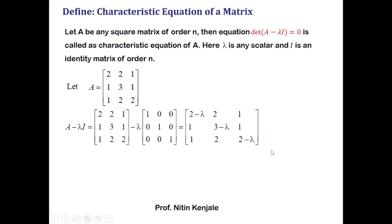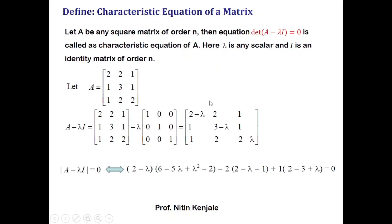Now we will find its determinant and equate it with zero. Further simplifying this, we will have the characteristic equation of matrix A as minus lambda cubed plus 7 lambda squared minus 11 lambda plus 5 is equal to zero.